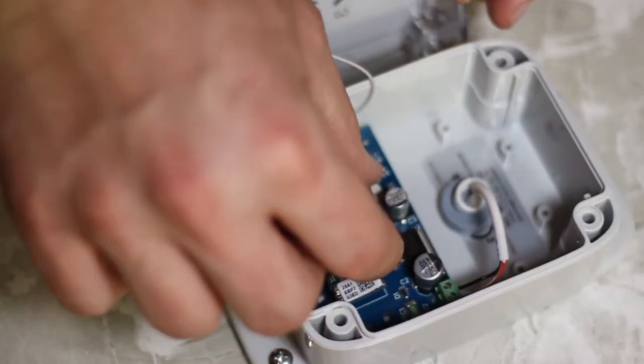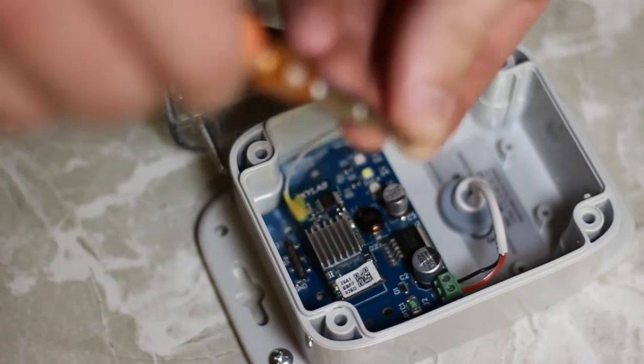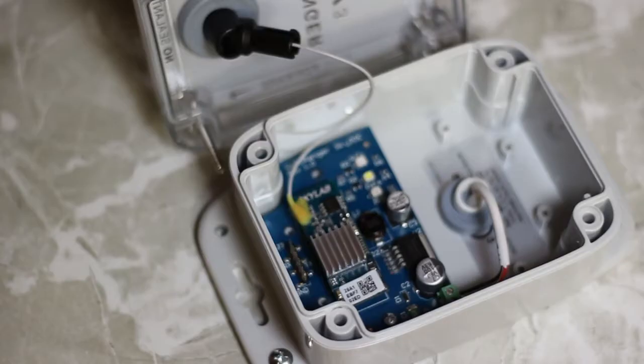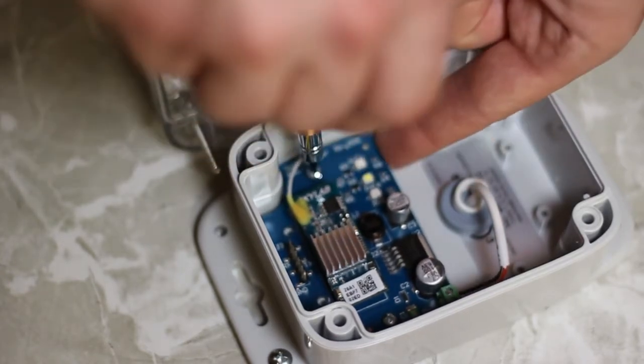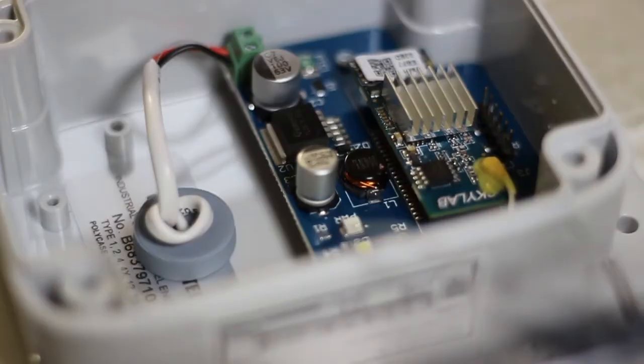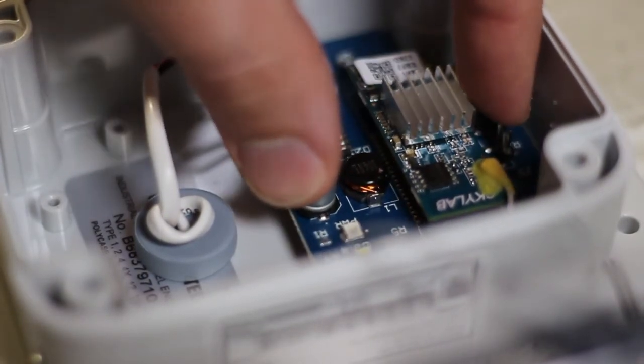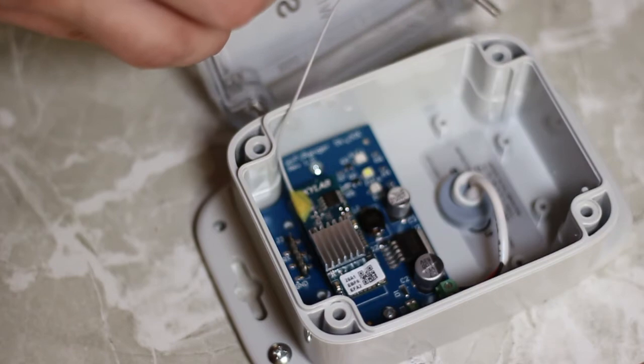Place the board back into the case and tighten the Phillips screws back into the case. Ensure there is still a little play with the board; this provides vibration absorption. Place the lid back onto the case.